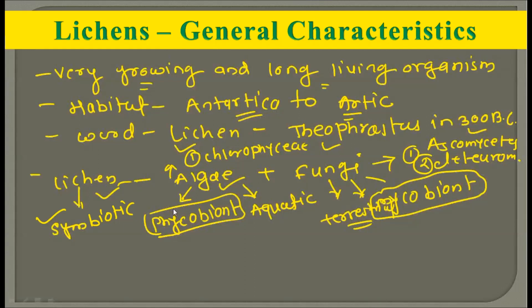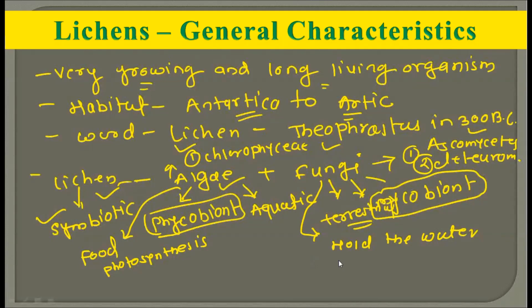In the combination of algae and fungi in lichen, algae prepare food through photosynthesis, while fungi have the ability to hold water which is essential for photosynthesis. Algae cannot live on dry terrestrial land, but with the combination of fungi, algae get water because the fungus can hold water for a very long period of time. The fungal partner gives water to algae, and algae use this water and sunlight to prepare food, which is then used by the fungi.